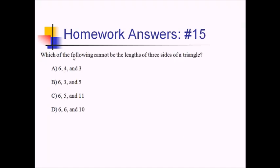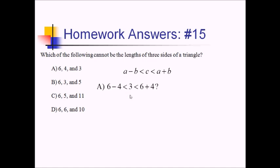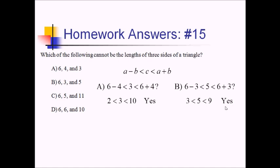For number 15, we're given four sets of numbers and want to know which cannot be the lengths of three sides of a triangle. We'll test them all in the inequality theorem: A minus B less than C less than A plus B. For choice A: 6 minus 4 less than 3 less than 6 plus 4, which is 2 less than 3 less than 10 — that's true, so choice A is fine. For choice B: 6 minus 3 less than 5 less than 6 plus 3 — is 5 between 3 and 9? It is, so choice B is also fine.